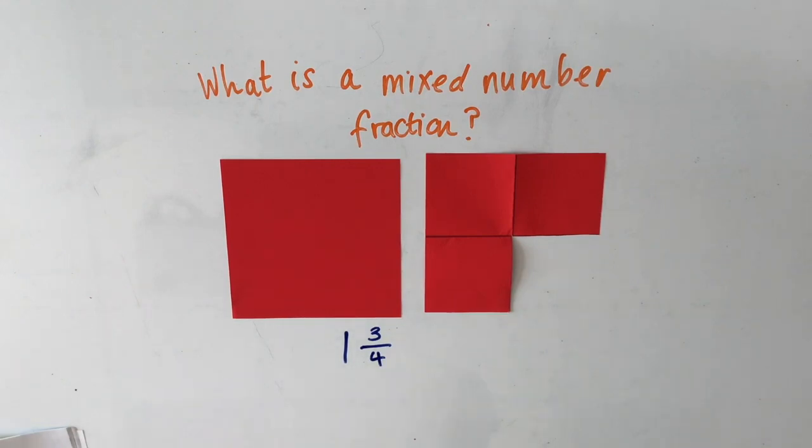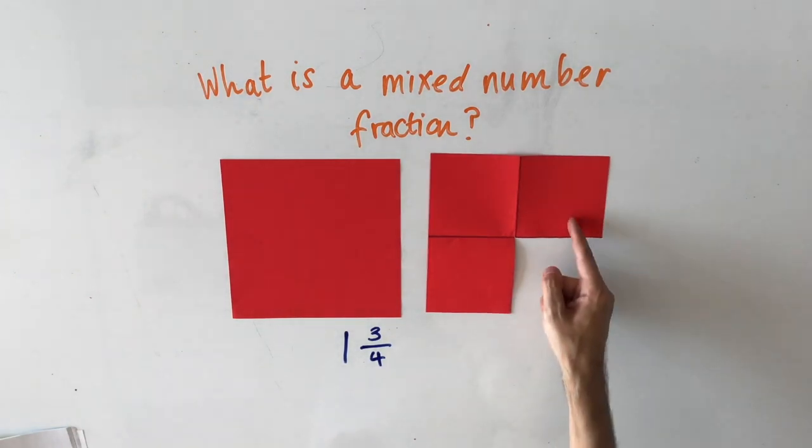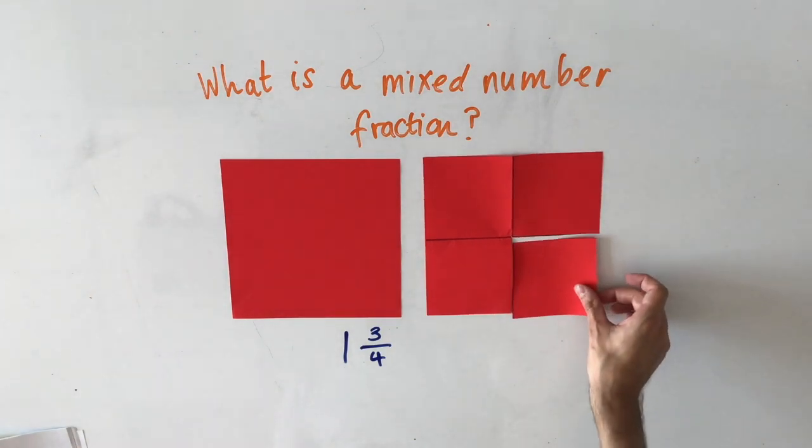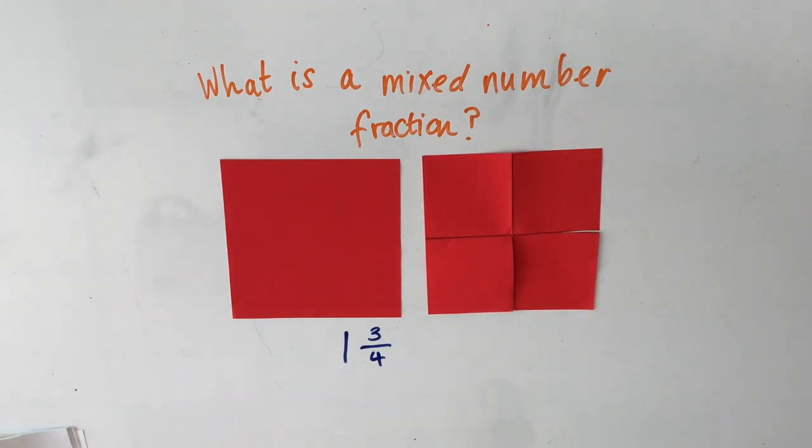Just to remind you, we know it's quarters because we can see that the second part that is less than one has been split into four. If I put that back, we then have two whole pieces of paper. When I take it away, it makes it have one and three quarters.